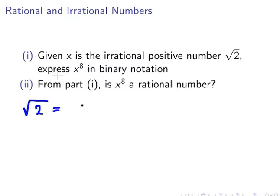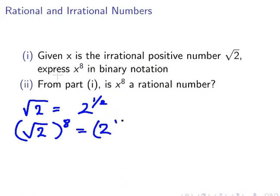The square root of 2 is 2^(1/2). When we put that to the power of 8, (√2)^8 equals (2^(1/2))^8, which equals 2^4. We are multiplying the one-half by 8, which gives us 4. So that equals 16.